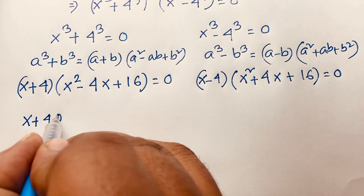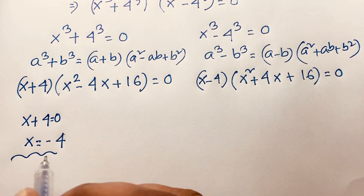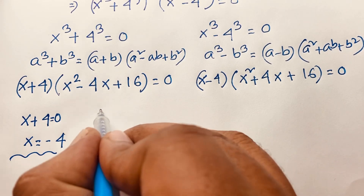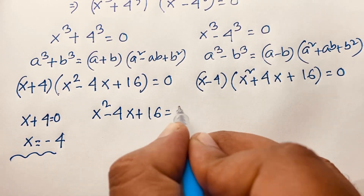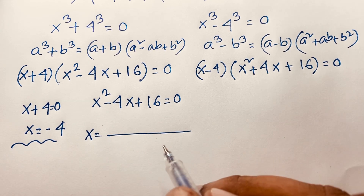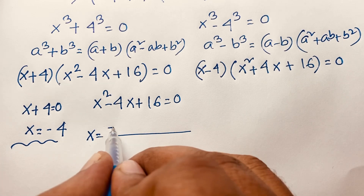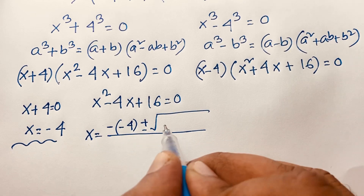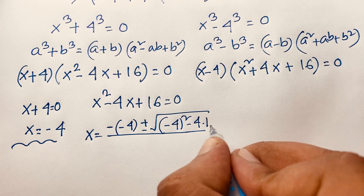Our first case: x plus four is equal to zero, so x is equal to negative four. We find the nice answer x equals negative four. Now for the quadratic equation x squared minus four x plus sixteen equals zero, we apply the quadratic formula: x equals minus b plus or minus square root of b squared minus four ac, over two a.